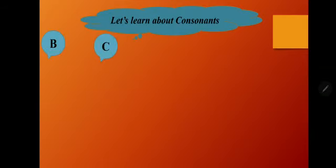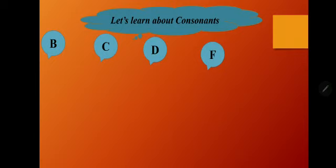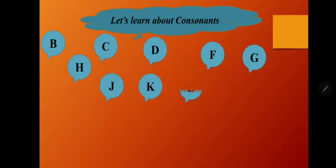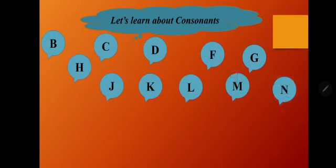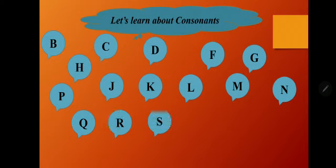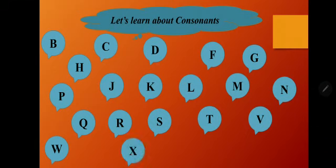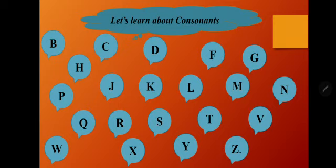The consonants are: B, C, D, F, G, H, J, K, L, M, N, P, Q, R, S, T, V, W, X, Y, Z. All the letters you can see on the screen right now — these are all our consonants.